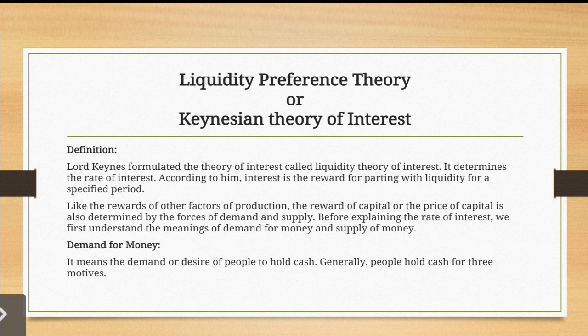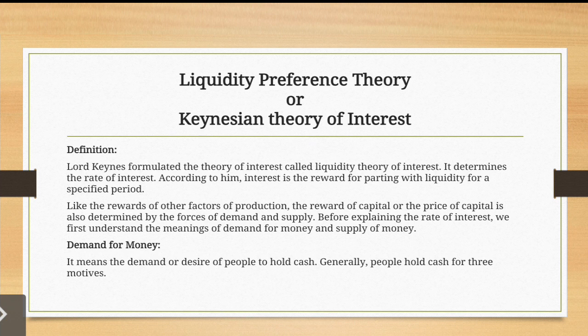According to this theory, interest is the reward for parting with liquidity for a specified period of time. To understand 'parting with': if you have one lakh rupees and someone asks you to lend it to them for two years, you might say you will charge them forty thousand rupees over two years — twenty thousand per annum. This means that person will give up use of that money for two years. This is 'parting with liquidity for a specified period.'